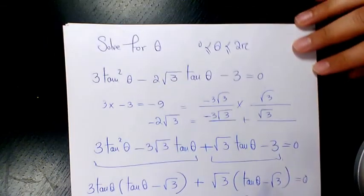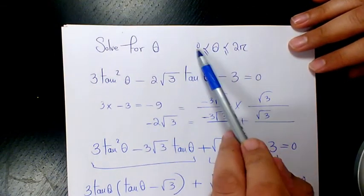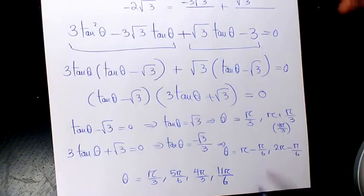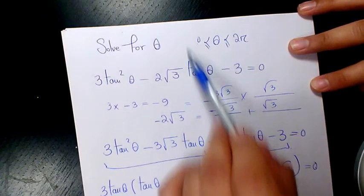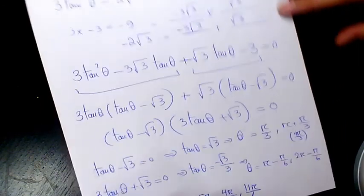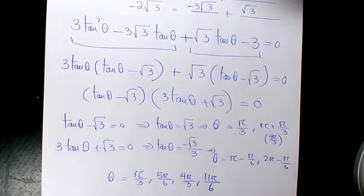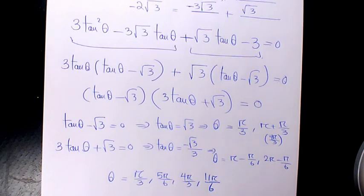Remember, when theta is between zero and two pi we get four answers; the number of answers depends on the range. Please leave a comment if you have any questions and don't forget to subscribe — you'll have access to many other videos on trigonometric equations, trigonometric identities, and other topics in math, chemistry, and physics. Thank you for watching and have a great day!